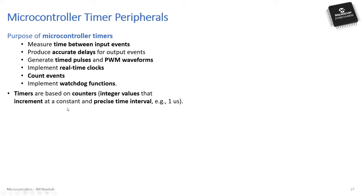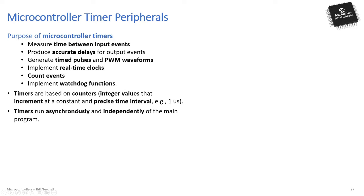Timers are based on integer counters that increment at a constant, precise rate, typically controlled by a crystal oscillator, giving microsecond or sub-microsecond resolution. These counters run asynchronously and independently of the main program — while your program is doing something else, the timer runs in the background and keeps counting at a regular interval regardless of what the main program is doing.